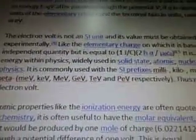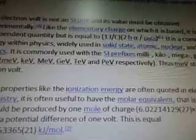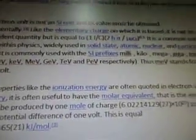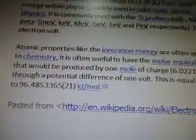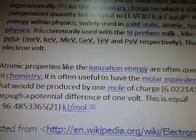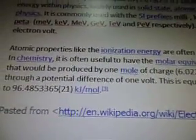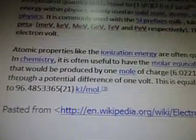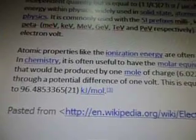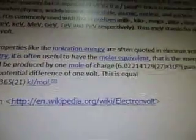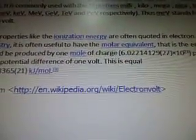It's a common unit of energy within physics, widely used in solid state, atomic, nuclear, and particle physics. It has atomic properties — the ionization energy is often quoted in electron volts. In chemistry, it is often useful to have the molar equivalent, that is the energy that would be produced by one mole of the charge. Again, that's under electron volt on Wikipedia.